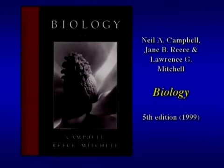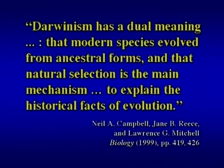I'm going to pick on a few textbooks that are widely used. Campbell, Reese, and Mitchell supposedly commands more than half of the market share for introductory college biology courses in this country. They say Darwinism has a dual meaning: first, that modern species evolved from ancestral forms — that's the descent — and that natural selection is the main mechanism to explain the historical facts. There's a subtle distinction here: the first claim, descent from a common ancestor, is being called a fact.